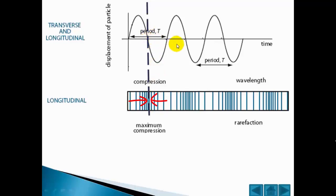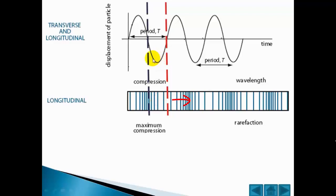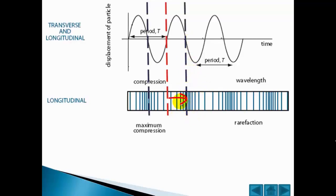On the top graph, a displacement to the right is given as positive; a displacement to the left is given as negative. The red line is the point of least density or rarefaction. The particles to the left are displaced to the left away from this point and towards the compression. The particles to the right are displaced to the right away from this point and towards the next compression. This is consistent with the top graph — to the left of the rarefaction is negative, so the particles are displaced to the left. The next broken black line shows another area of compression, where the particles to the left are displaced to the right and the particles to the right are displaced to the left, causing that compression. This is how compression and rarefaction can be represented graphically.